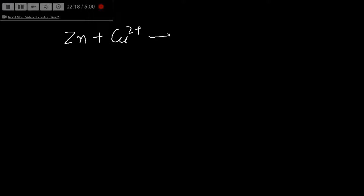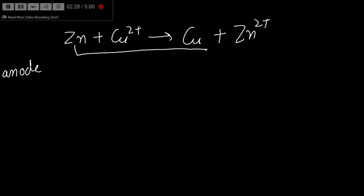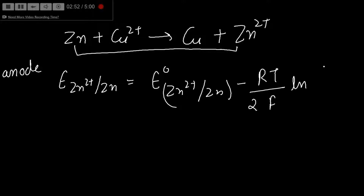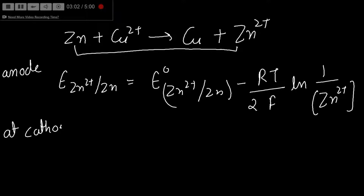Let's understand this with an example. Consider the cell: Zn reacting with Cu²⁺ to give Cu and Zn²⁺. At the anode, oxidation takes place. So for the zinc electrode, E(Zn²⁺/Zn) = E°(Zn²⁺/Zn) minus (RT / 2F) times ln(1 / [Zn²⁺]), since two electrons are involved.